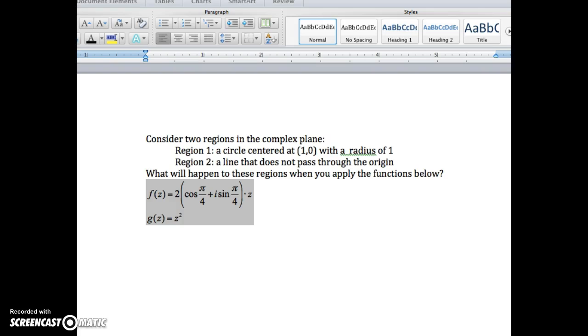We're asked to consider two regions in the complex plane. Region 1 is a circle centered at the point (1,0) with a radius of 1, and region 2 is a line that does not pass through the origin. The y-intercept and the slope are not particularly important, but this one looks like in the book it has a y-intercept of about negative 1/3 and a slope of negative 1/2.